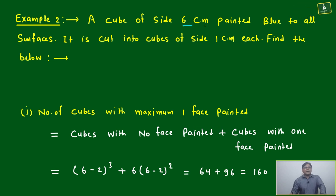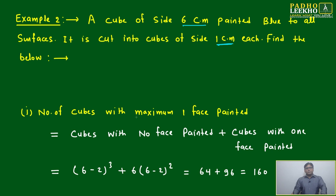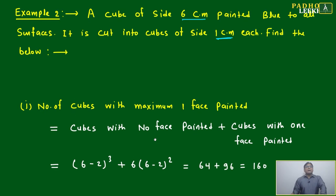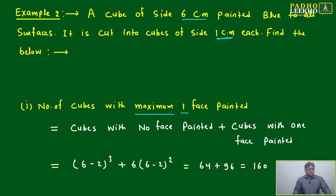A cube of side 6 centimeters is painted blue on all surfaces. It is cut into cubes of side 1 centimeter. Find how many cubes have a maximum of one face painted. Be careful about all the wording.